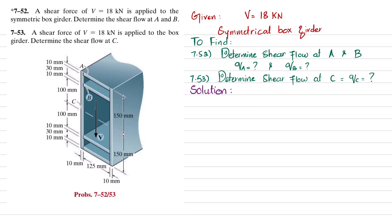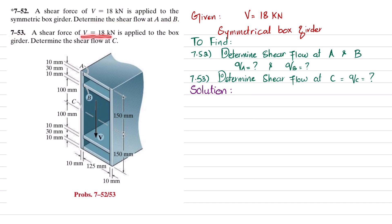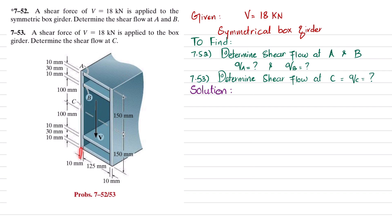Welcome back. Today we will solve problems 7-52 and 7-53. The problem statement is: a shear force of 18 kN is applied to the symmetrical box girder — determine the shear flow at A and B. In problem 7-53, a shear force of 18 kN is applied to the box girder — determine the shear flow at C. The box girder has a total height of 300 mm and total width of 145 mm, with a shear of 18 kN applied.